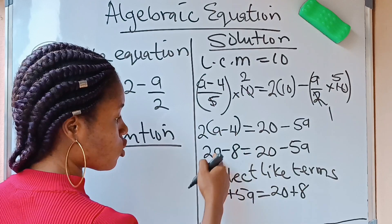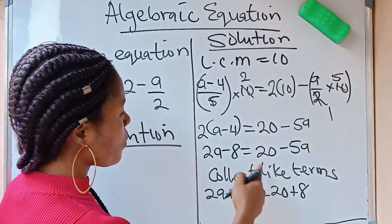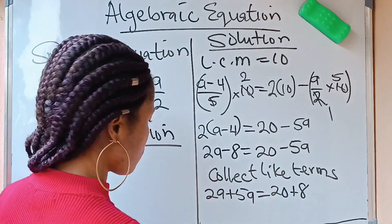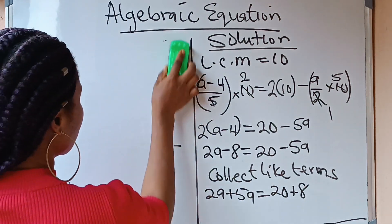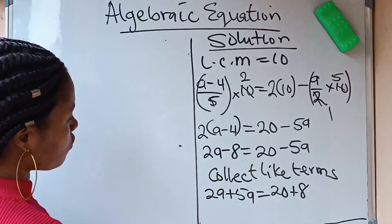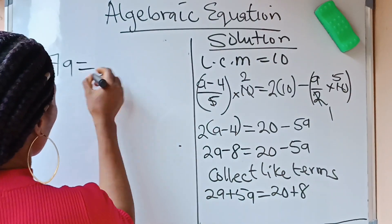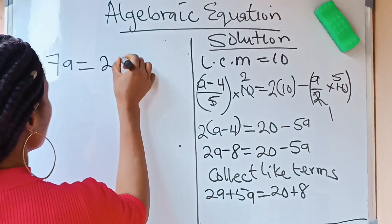Is equal to, this 20 is remaining here. This minus 8 will cross the equation to come over to become plus 8. Then, you are going to have 2A plus 5A will give us 7A. Is equal to, 20 plus 8 will give us 28.